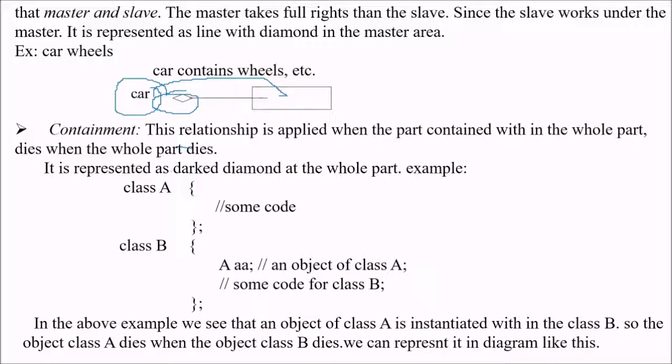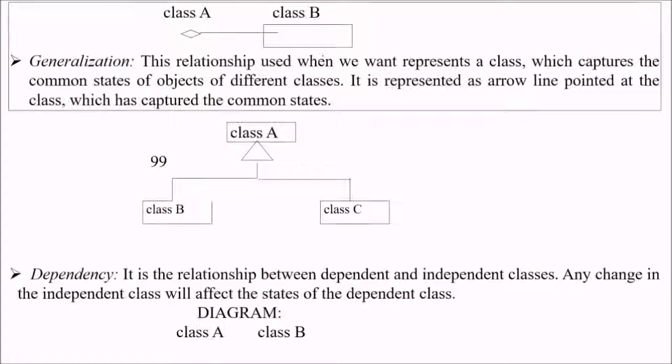Then we have containment. Containment means this relationship is applied when the part contained within the whole part dies when the whole part dies. It is represented as a dark diamond at the whole part. For example, this is a class with some code. This is a class B with an object of class A with some other code. In this example, we see that the object of class A is instantiated within the class B. The object of class A dies when the object B dies. We can represent it like this. Class A and class B containment.